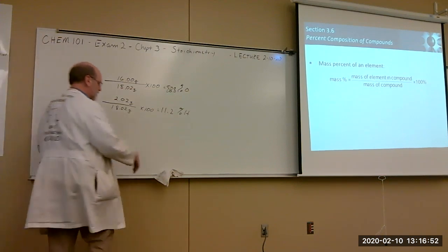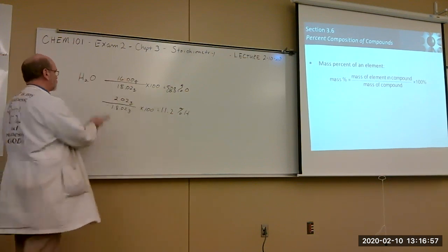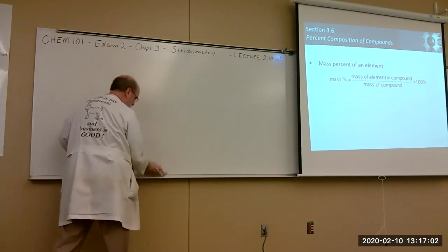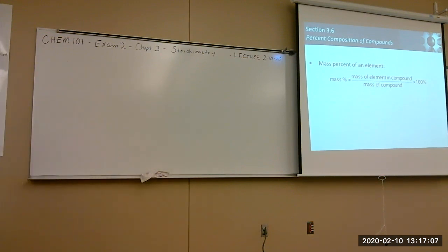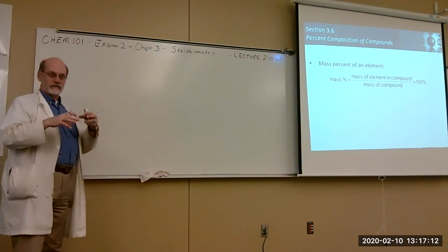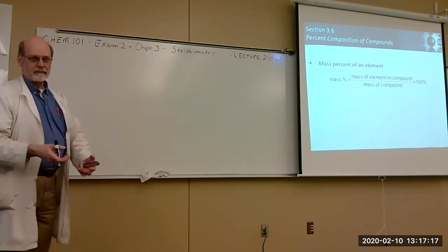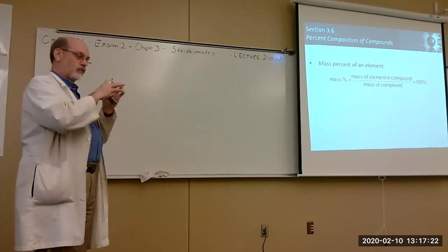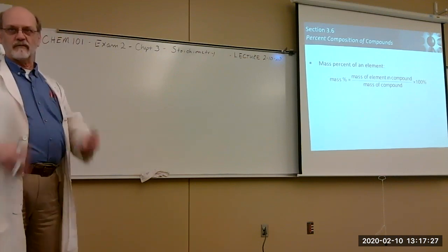That's how you calculate percent composition from a formula. What a bench chemist does in the lab is take a sample, purify it if necessary, analyze it for elemental composition, and come out with percent this and percent that. The analytical process gives you the percent composition, and from that you can calculate and eventually determine the formula for the molecule.